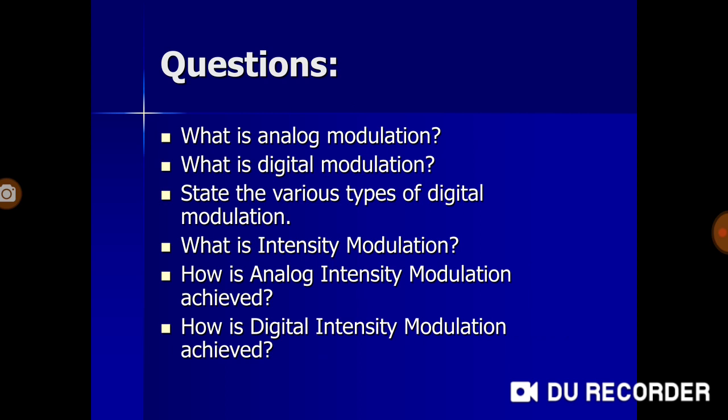We have now discussed the standard modulation techniques utilized in optical transmission. For review: what is analog modulation? If you are a student of electronics and communication engineering, you will have studied modulation earlier. Analog modulation means the carrier is varied in accordance with the analog information signal — the different property utilized gives the name of the modulation: AM, FM, or PM.